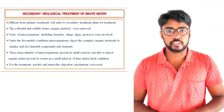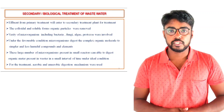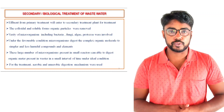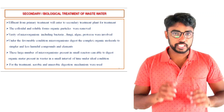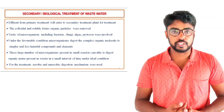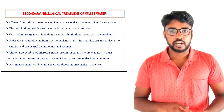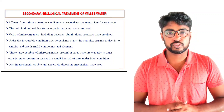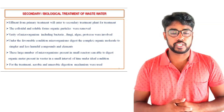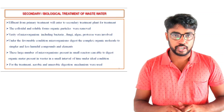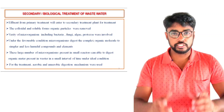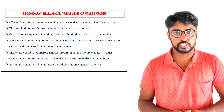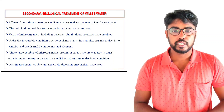The effluent from primary treatment is entered into the secondary treatment plant. In secondary treatment, colloidal and soluble forms of organic molecules are removed. A variety of organisms are involved — for example, bacteria, fungi, algae, and protozoa. Under favorable conditions, these organic molecules are converted into simpler and less harmful compounds. A large number of microorganisms in a small reactor can digest organic materials in a short interval of time under ideal conditions.